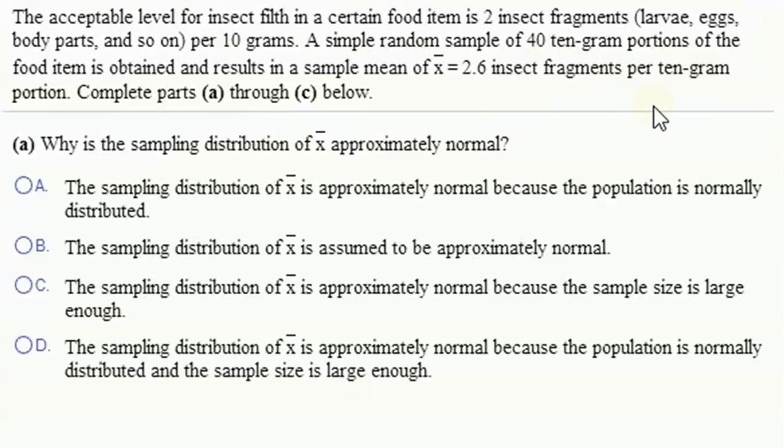Okay, now we are talking about sampling distributions. The acceptable level for insect filth in a certain food item is two insect fragments per 10 grams. A simple random sample of 40 ten-gram portions is obtained with a sample mean of 2.6 insect fragments per ten-gram portion.